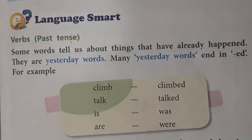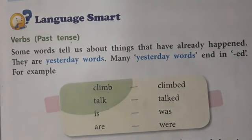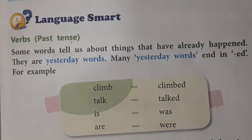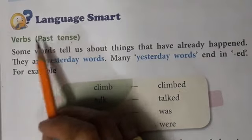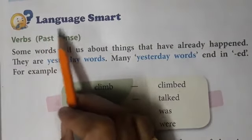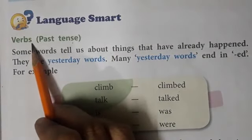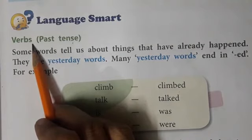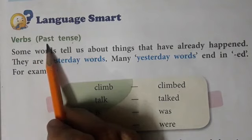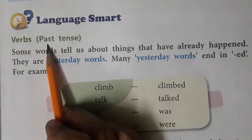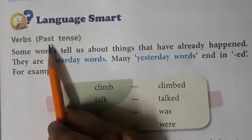Before starting worksheet 1, let me tell you what is given in your book. You have to open page 7 in your book, in the segment of Language Smart. Verbs are given there — verbs are called kriya, as you very well know. Verbs denote tenses: present, past, and future — these are the three tenses. And today we will discuss about past tense.